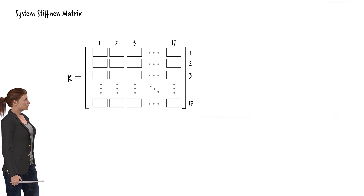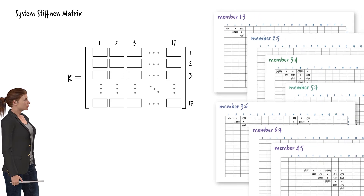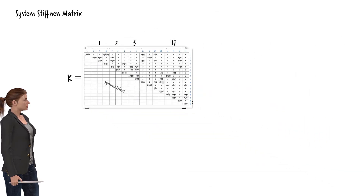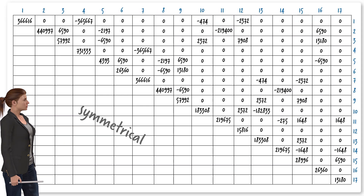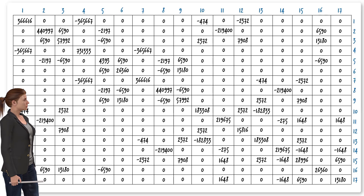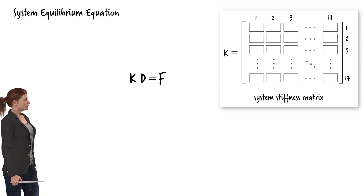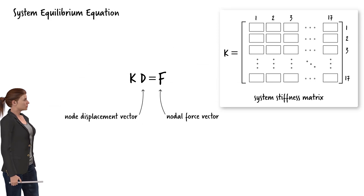We will use the 17 by 17 matrices defined for each frame member to assemble the system stiffness matrix. The sum of these matrices yields the system stiffness matrix. Since the system stiffness matrix is symmetrical, we can easily generate the full stiffness matrix. Knowing the system stiffness matrix K, we can determine the system nodal displacements if we know the joint force vector, so let's determine the nodal force vector.